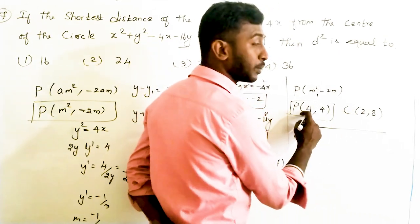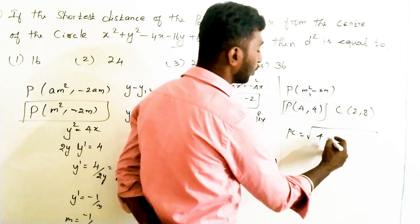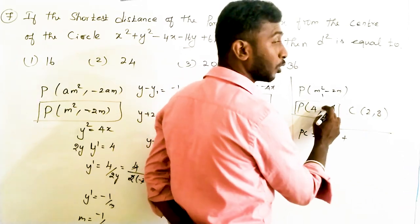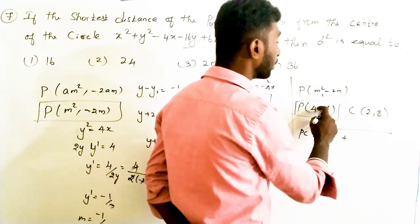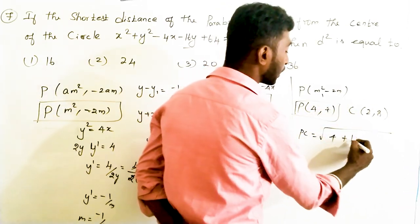Now we compute d², the square of the distance from point P (4, 4) to the center of the circle (2, 8). d² = (4-2)² + (4-8)² = 4 + 16 = 20. So d² = 20.